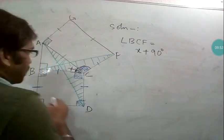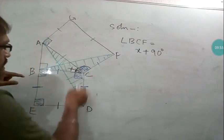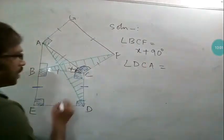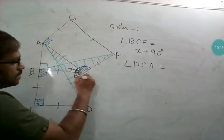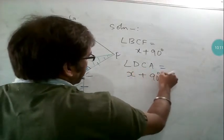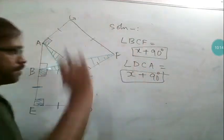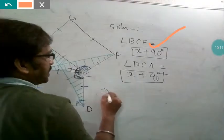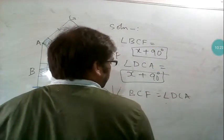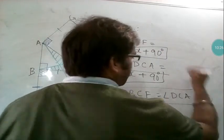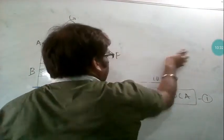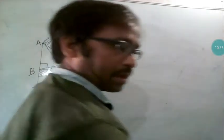Now in triangle ACD, we have angle ACD — or you may say DCA, same thing. That is also 90 degrees plus angle X. So angle ACD = 90° + X. From this it is visible that these two angles are equal. So these two are equal. Now I will prove my triangles congruent because I have found the important angle that will be used.